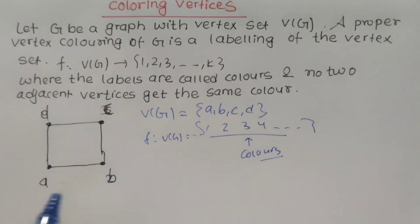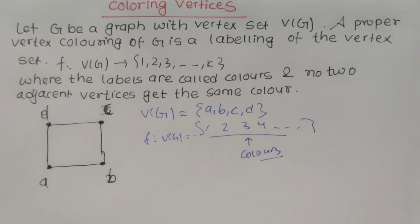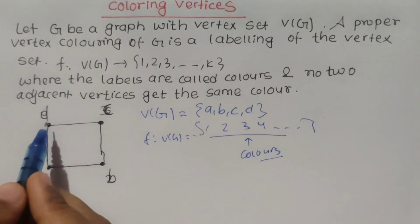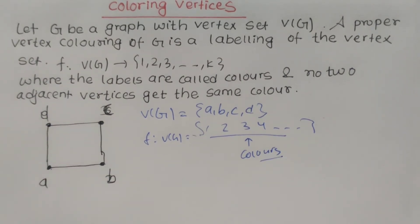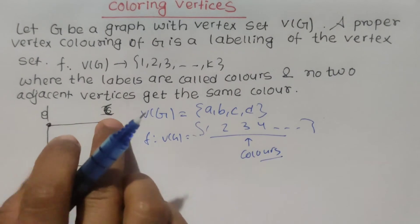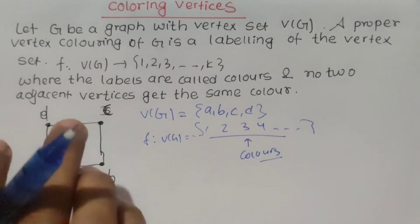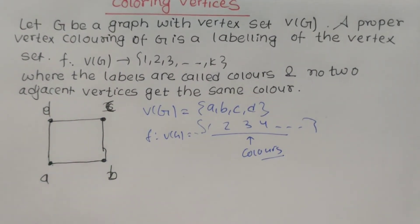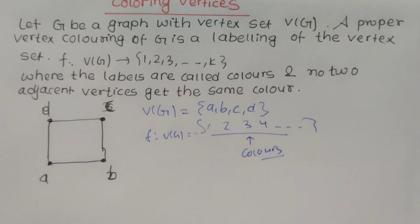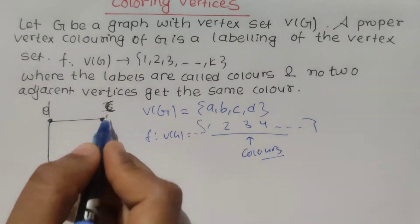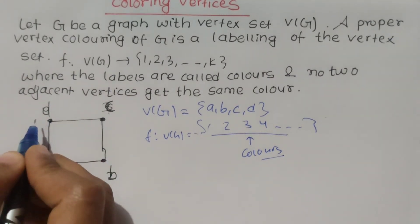For example: A and B are adjacent, and A and D are adjacent. So A and B cannot have the same color, and A and D cannot have the same color. But A and C can have the same color because they are not adjacent. So the colors could be: Red, Blue, Yellow, or Black.